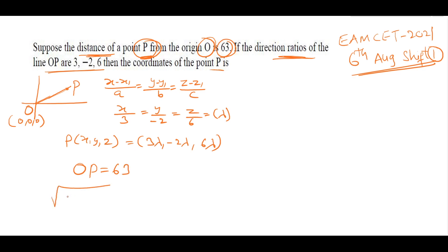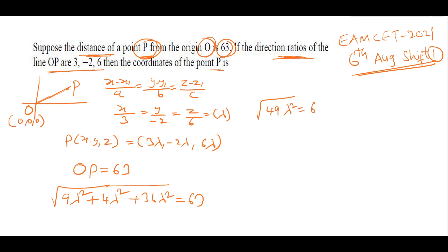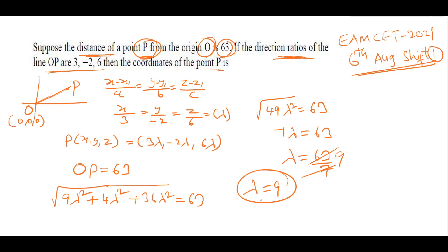So √((3λ)² + (−2λ)² + (6λ)²) = 63. That is √(9λ² + 4λ² + 36λ²) = √(49λ²) = 7λ = 63. Therefore λ = 63/7 = 9.